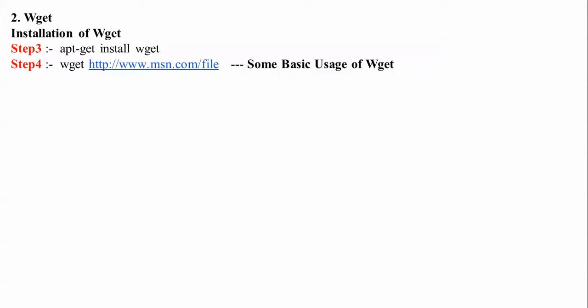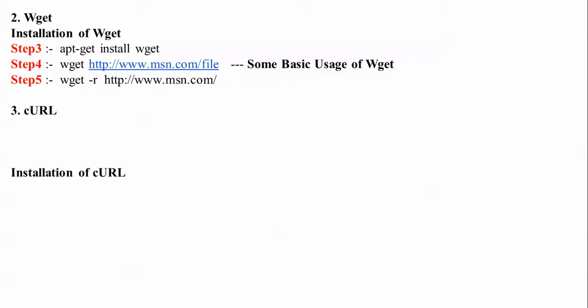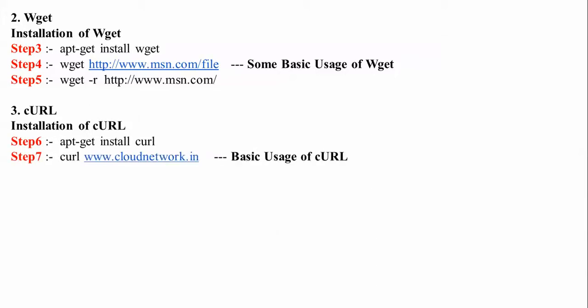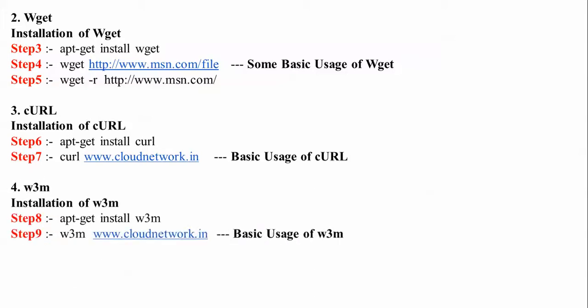The second tool is wget. The command to install this package is apt-get install wget. This is the first step to check the downloaded file — I'm using the MSN website, but you can use any website. Next, I'll check the basic uses of wget. Then I'll cover curl — the command to install it and check its basic uses. Next is w3m — the installation command and steps to check its basic uses. Finally, elinks — installation command and how to check it.